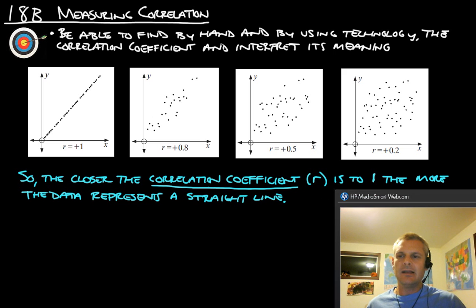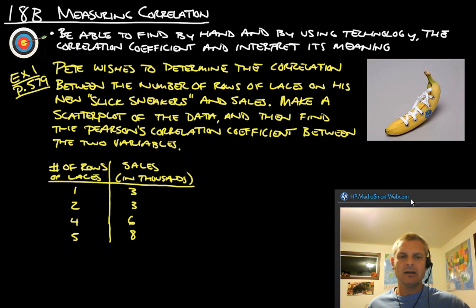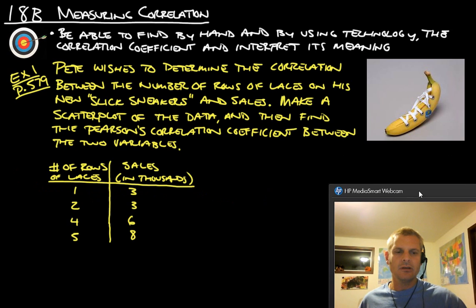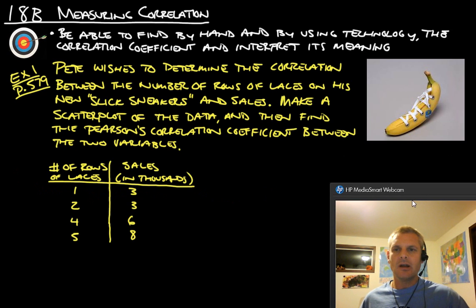So with that, let's calculate a correlation coefficient. Pete wishes to determine the correlation between the number of rows of laces on his new slick sneakers and sales. Make a scatterplot of the data, and then find the Pearson's correlation coefficient between the two variables.